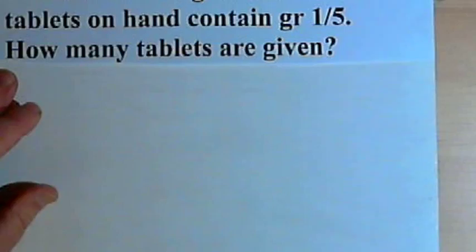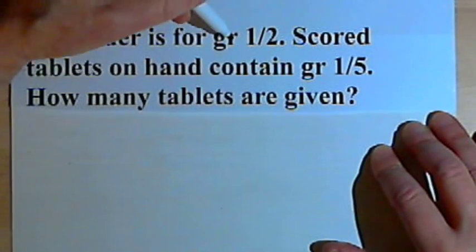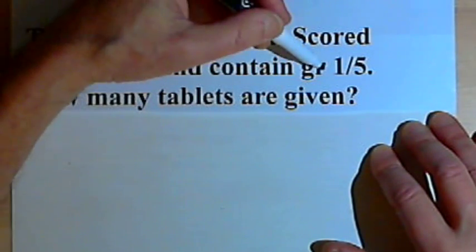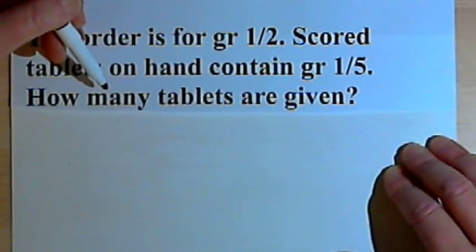So here's the first problem. This one says that the order is for one-half grain, and that the scored tablets on hand contain one-fifth of a grain. We want to know how many tablets are given.